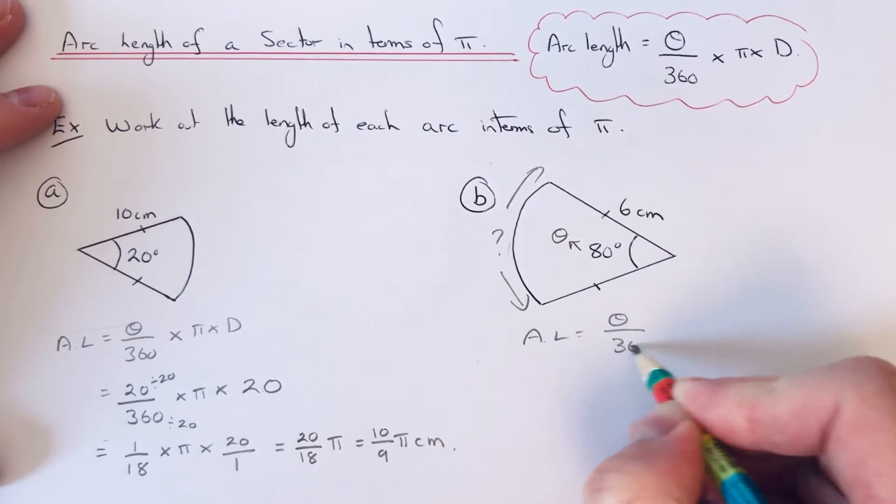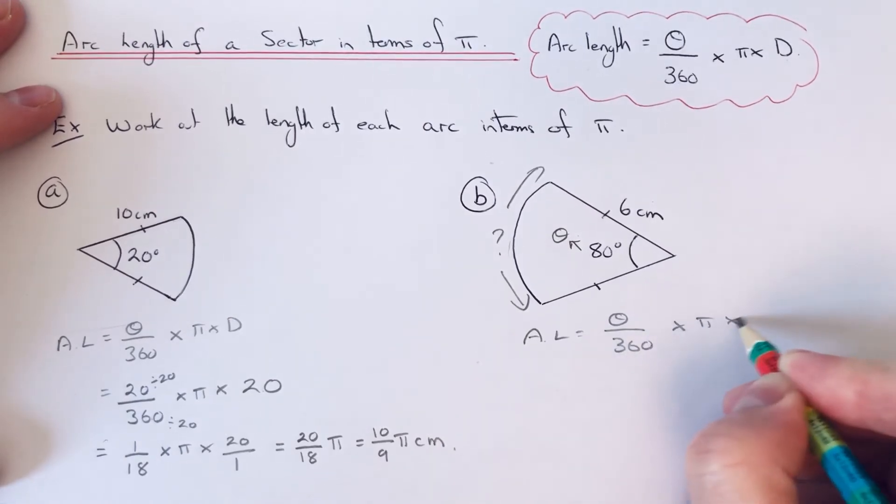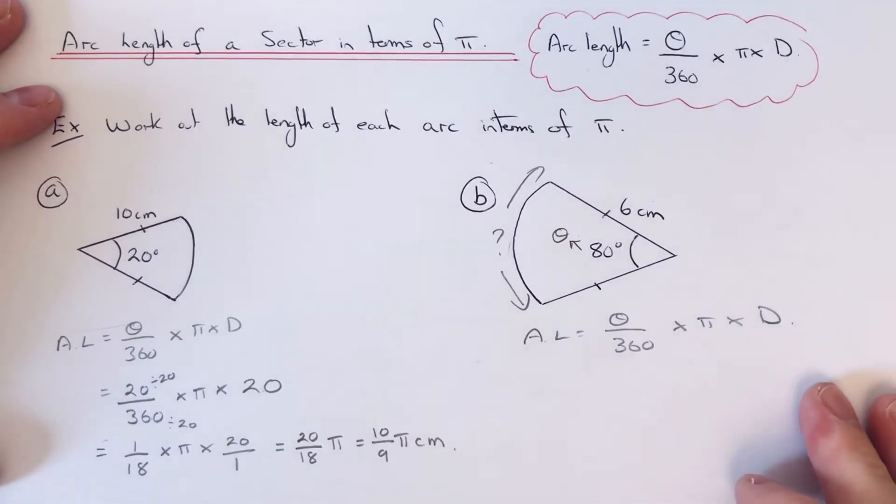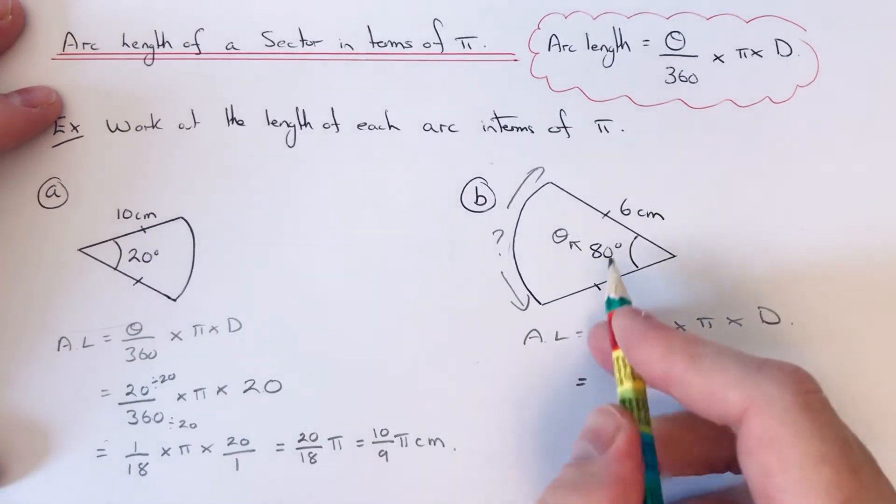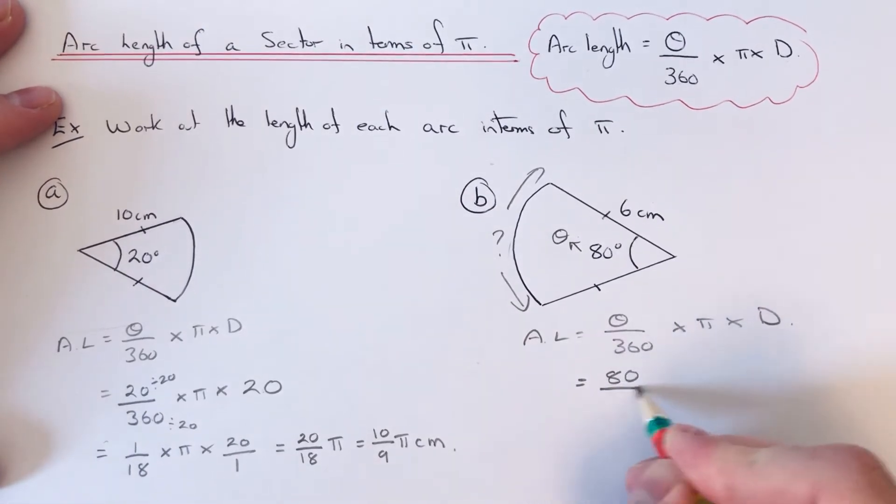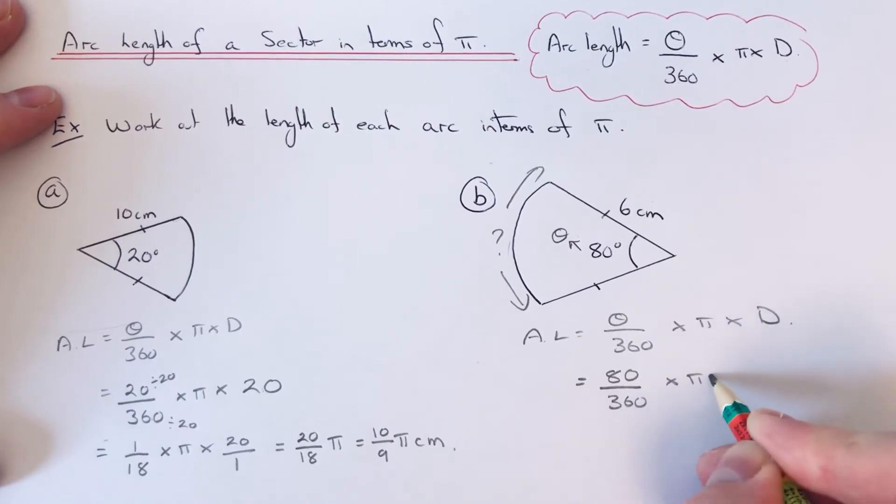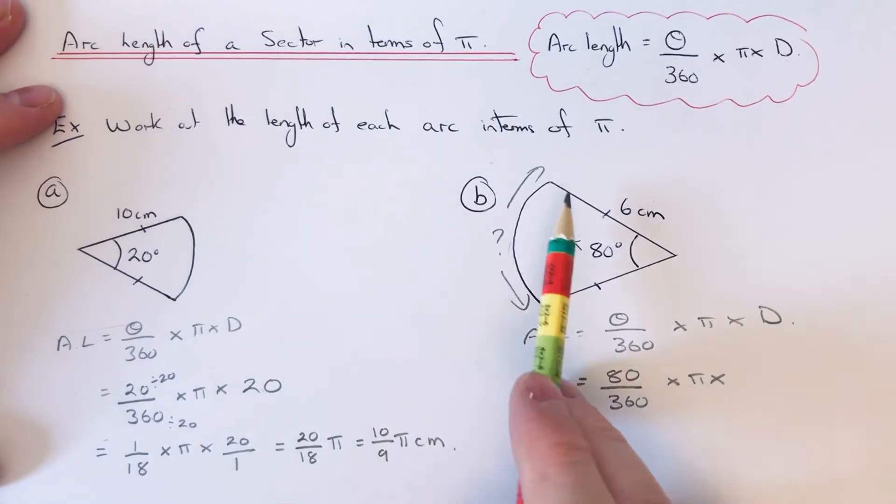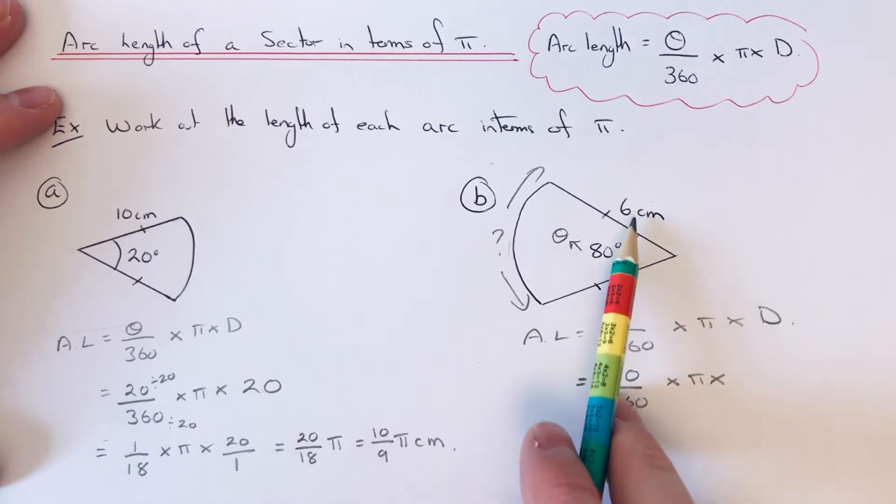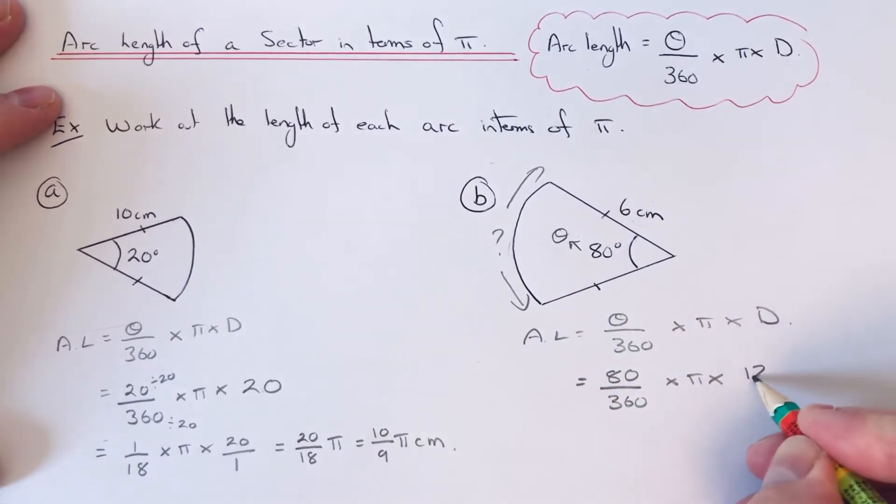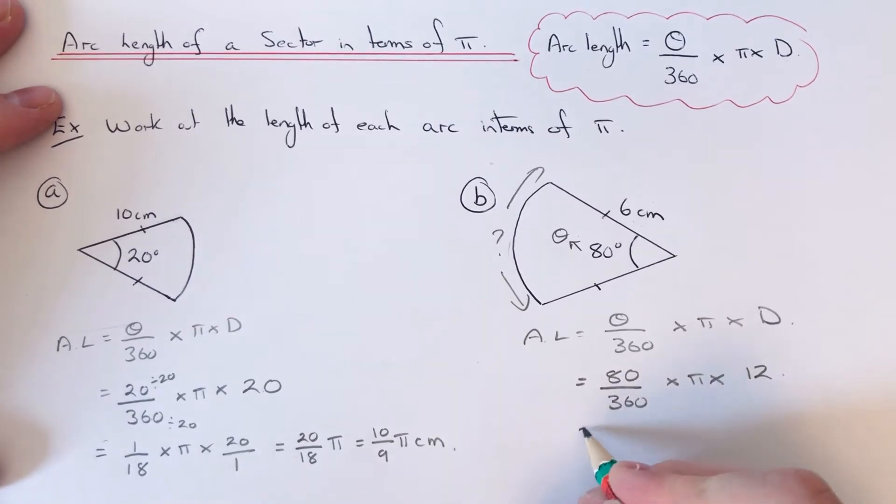θ/360 × π × d. θ is 80, so it's 80/360 × π times the diameter. The diameter will be double this length because that's the radius, so that's 12.